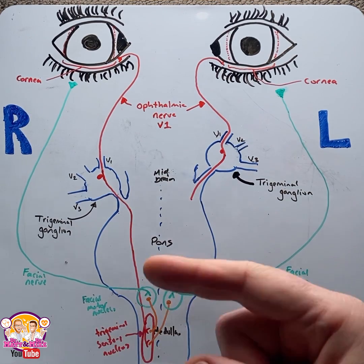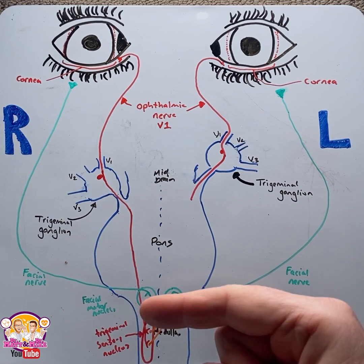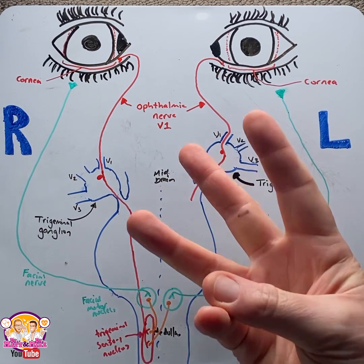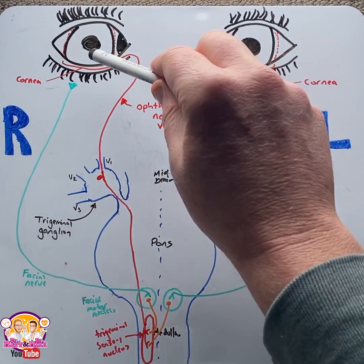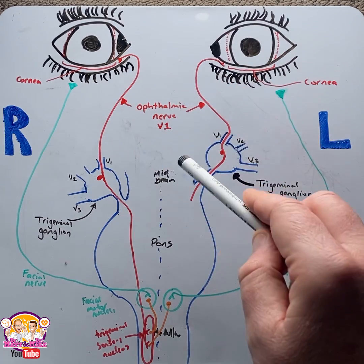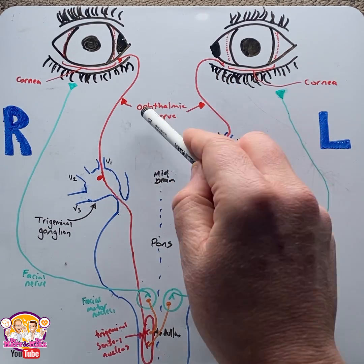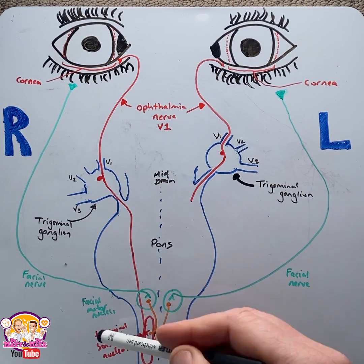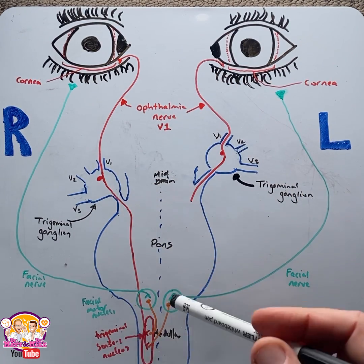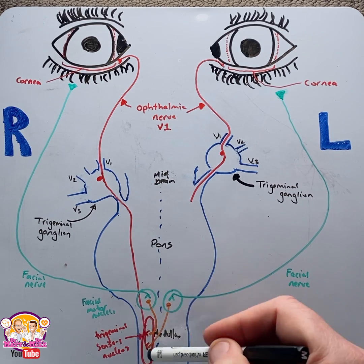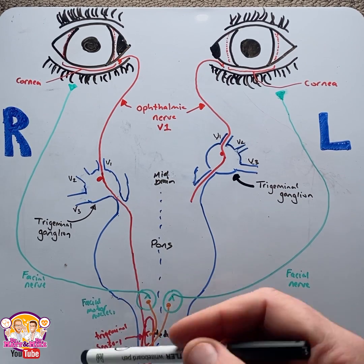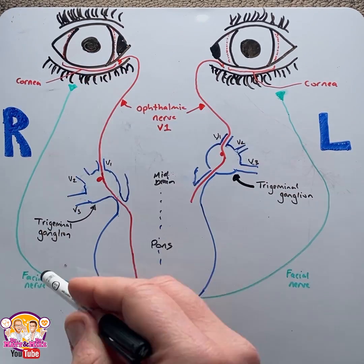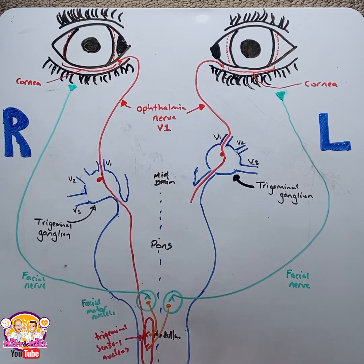The corneal reflex, like the pupillary reflex, tests the integrity of three main structures: a sensory nerve — in this case the ophthalmic nerve or V1 — the pons and medulla, specifically the trigeminal and facial nuclei, and number three, a motor nerve — in this case the facial nerve.